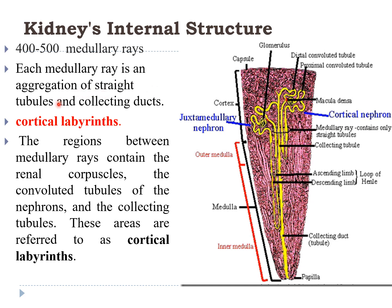These medullary rays contain collections of straight tubules — both straight descending and straight ascending — and collecting ducts. In between the medullary rays is a yellow-colored area called the cortical labyrinth, which contains renal corpuscles, convoluted tubules, collecting tubules, and collecting ducts. Between any two medullary rays, the region is called the cortical labyrinth.